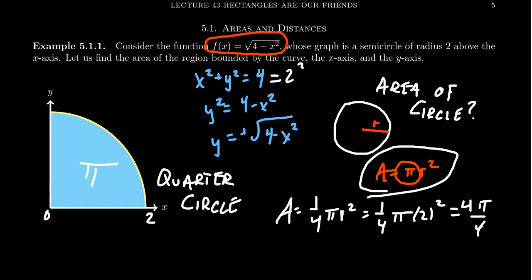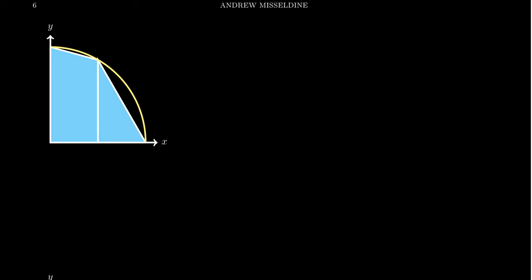One could approximate π by approximating the area under this quarter circle. But how does one find the area bounded by the region between the x-axis, the y-axis, and the curve y = √(4 − x²)? Like we discussed earlier, we can do areas of polygons.